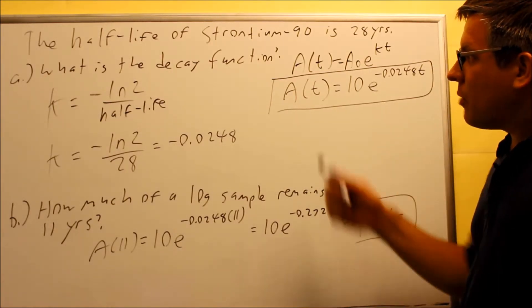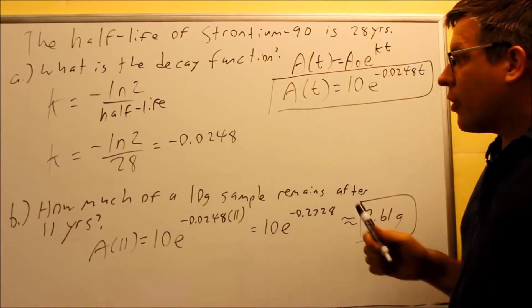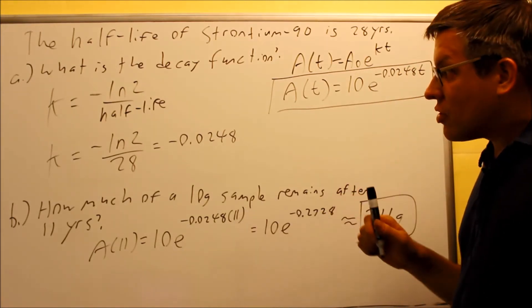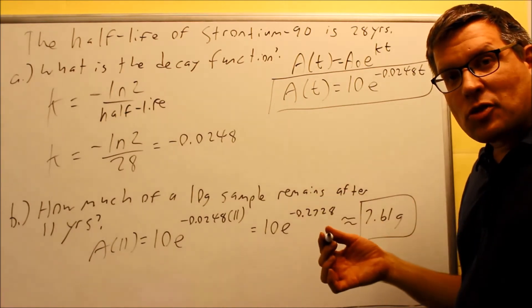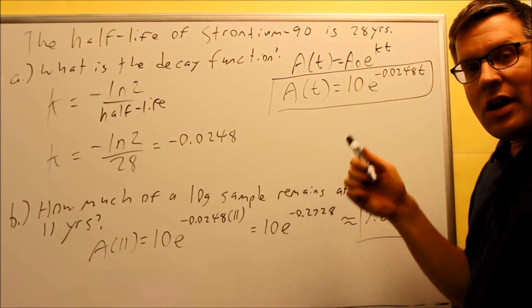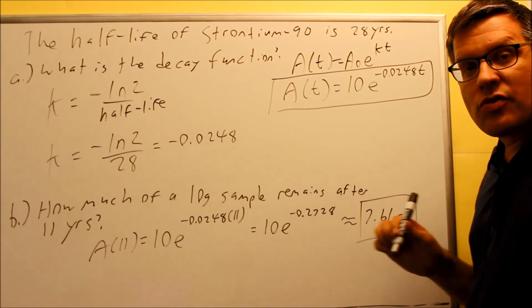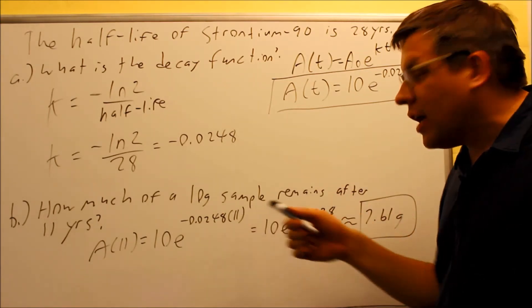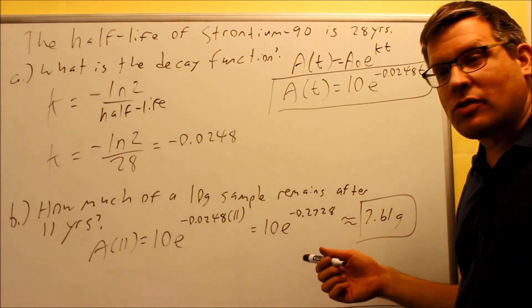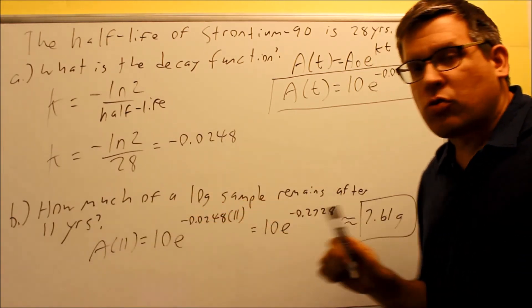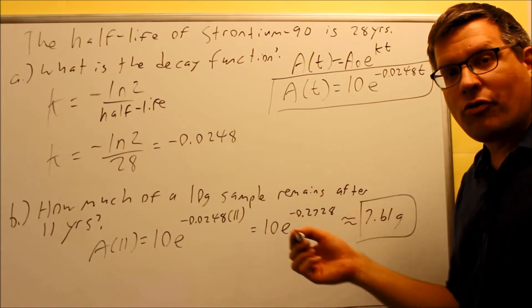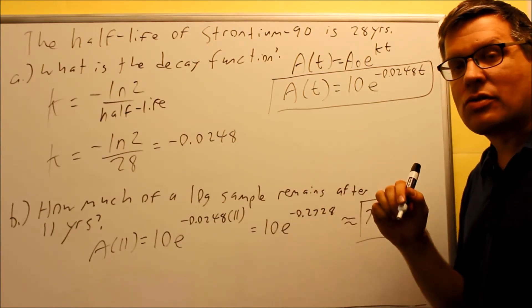So what does that mean by half-life? Well that means that if I were to put 28 exactly into here for t, that means I should actually get 5 grams because we know that 28 is how long it takes for half of something to decay. So if I put in exactly 28 in here, I should expect 5 for the answer. Well we haven't quite reached 28 years, we're only at 11 years, so it makes sense that our answer should be more than 5 because not half of it has decayed yet. So this answer would definitely make sense for the conditions we have for this problem.